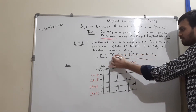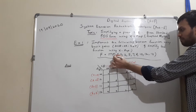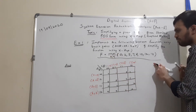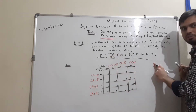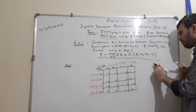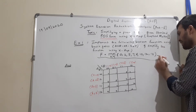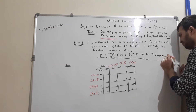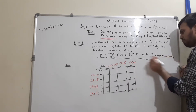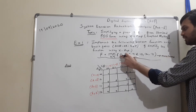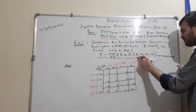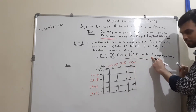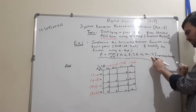Remember: when capital M is used and π (pi) is used, the Boolean function is given in the form of max terms. So basically, all these terms — 0, 2, 5, 7, 8, 10, 12, 14 — are max terms of the given Boolean function.